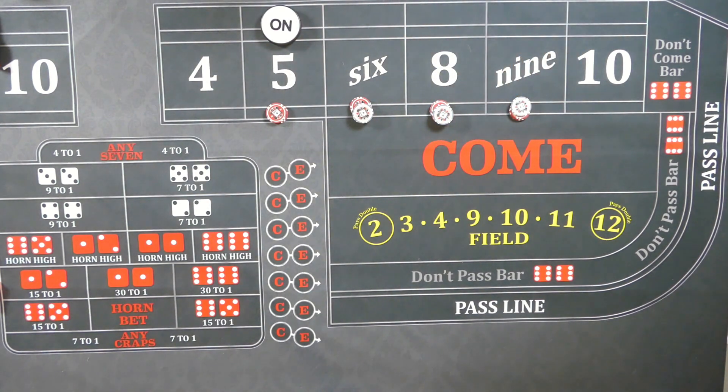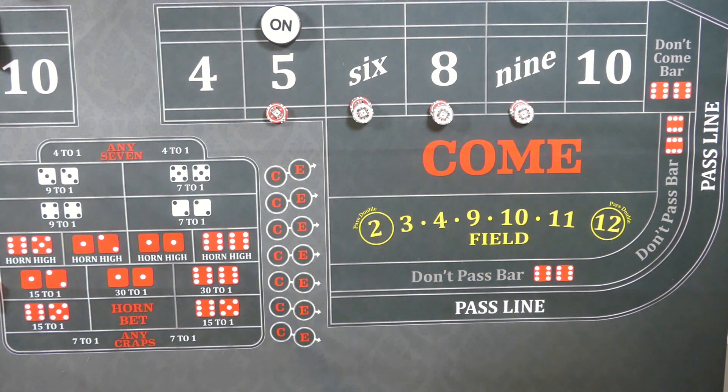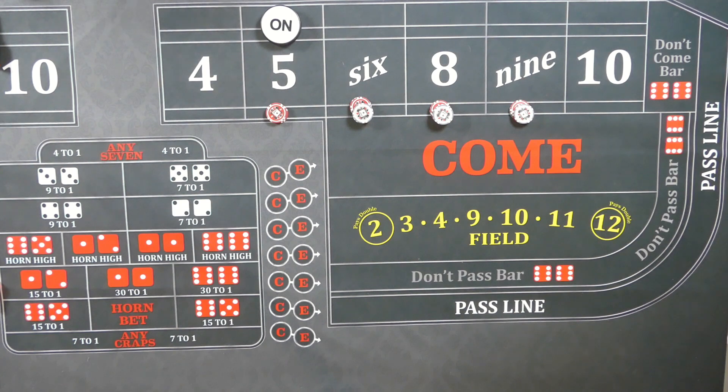Now, this is where he does point out that the worst case scenario for this strategy would be for the inside numbers to all roll one time and then a 7 out. That would hurt. You'd be in $72. If you did it this way, you'd have $42 each on the 6 and 8 and $36 each on the 5 and 9. But instead, we'll remain positive and hope that something is going to hit.